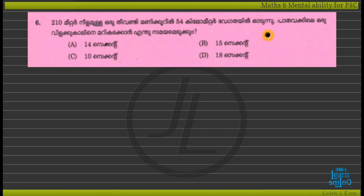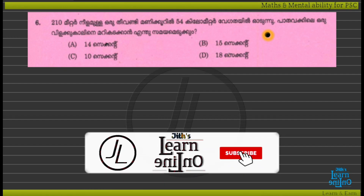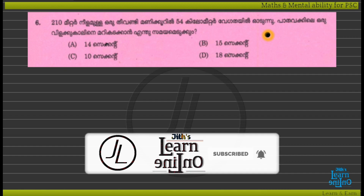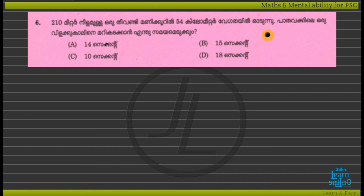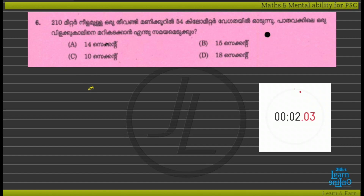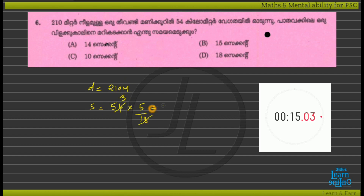Let's calculate this for 5 seconds. Let's start with the problem. We don't have a unit because it's time consuming. The distance between the train and the length of the train is 2. The speed is 54 kilometers per hour. The speed is 5 by 18, so we have 3 times 5 equals 15 meters per second.